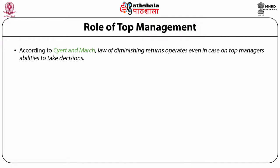According to Cyert and March, the law of diminishing returns operates even in the case of top managers' abilities to take decisions. Therefore, as the goals increase, the efficiency of decision-making may decrease. Therefore, firms mainly focus on satisficing behavior.